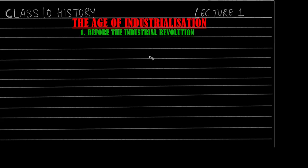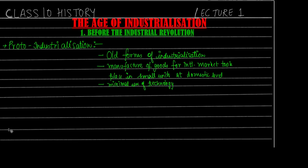In the last video we saw how, in the introduction, I discussed how we usually link industrialization to factories. But actually, factories are not directly linked to all of industrialization, because before the mass market, goods were manufactured without factory involvement. This example is proto-industrialization - basically an old form of industrialization.